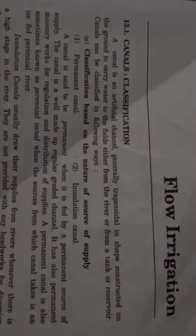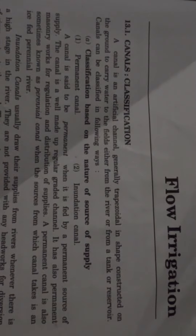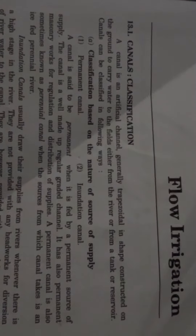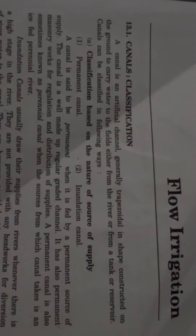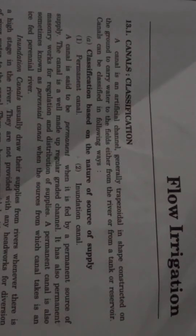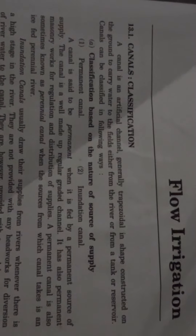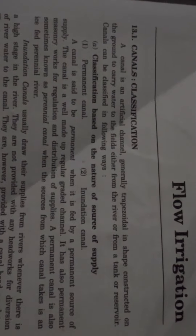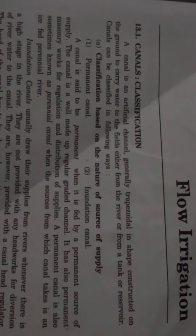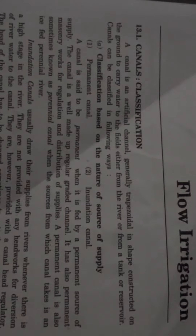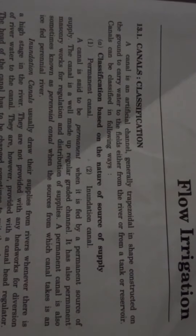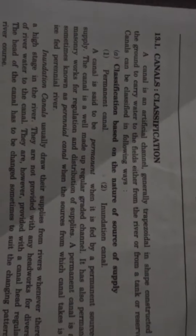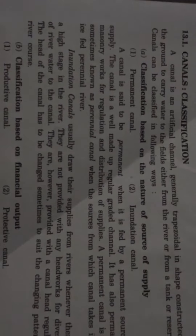Classification based on the nature of the source of supply. There are two types: permanent canal and inundation canal. A canal is said to be permanent when the source of supply is permanent. The canal is well maintained and made up of a regular graded channel with permanent masonry work for regulation and distribution of supply.